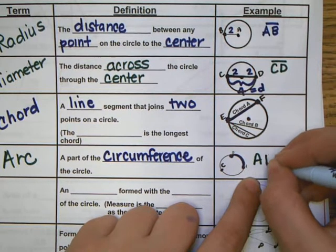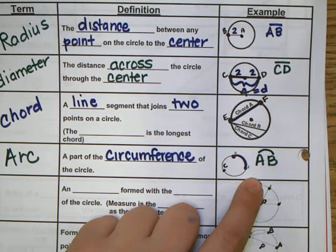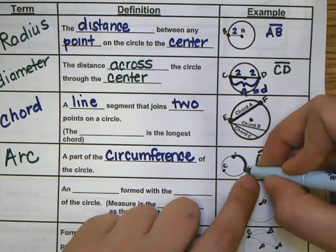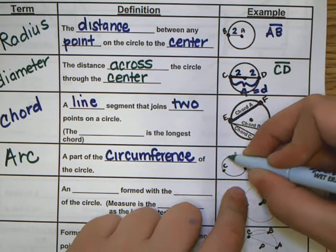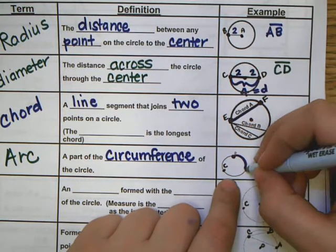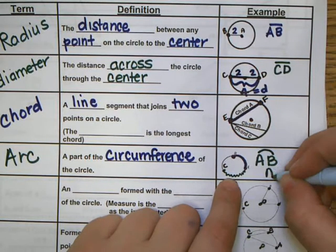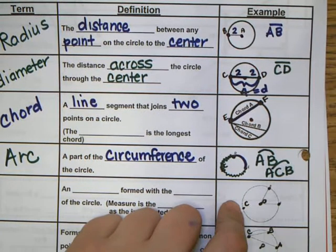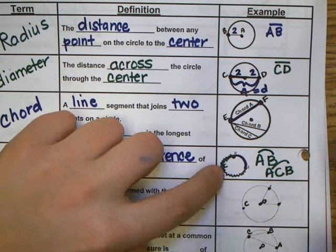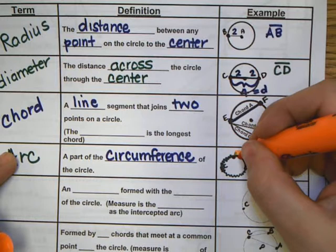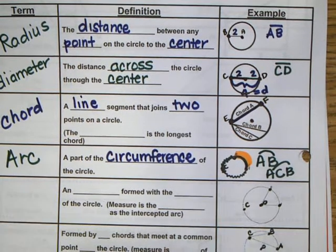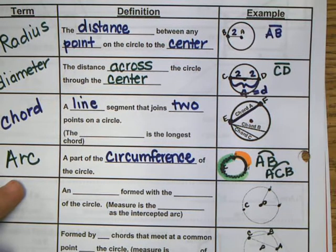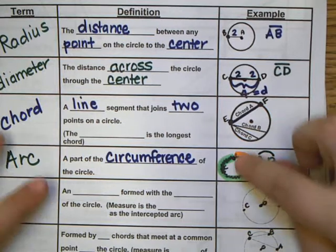When we write an arc, we put a little curved line over the letters. So arc AB has a small arc symbol over A and B. We know it's going the short way from A to B. If we go from A to B the long way around through point C, that would be called arc ACB. So those are two different arcs on the circle: the shorter arc AB, and the longer arc ACB.